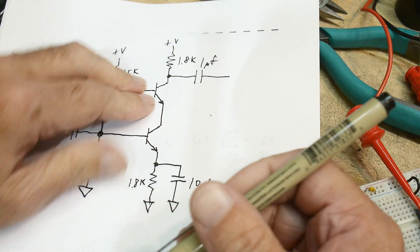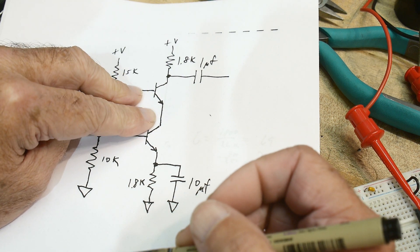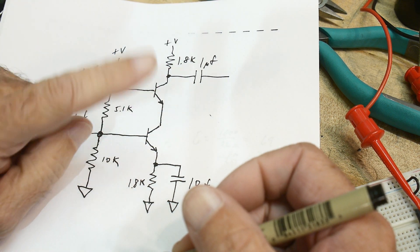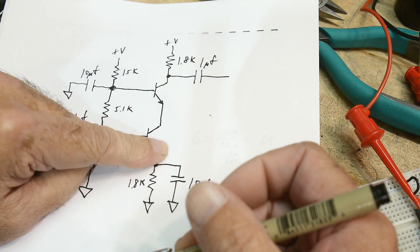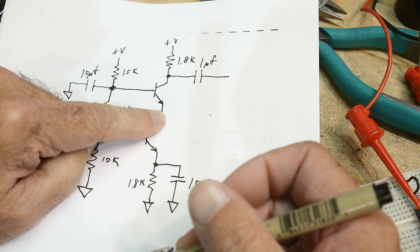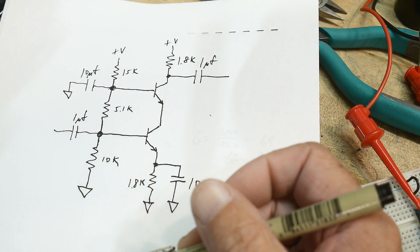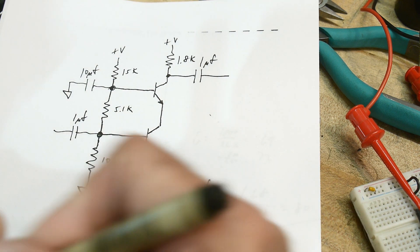Well, you could actually think of this as a common base amplifier. So you have this common emitter amplifier followed by a common base amplifier. Now, the common base amplifier, remember, the current gain...